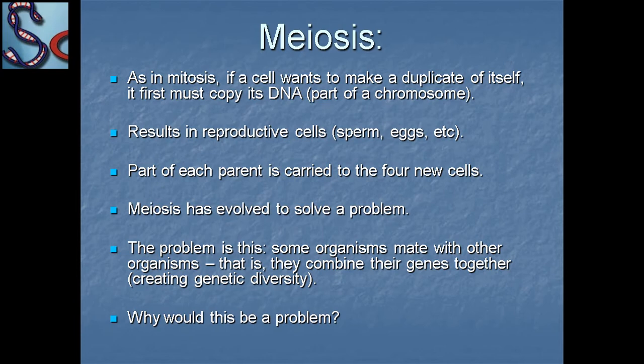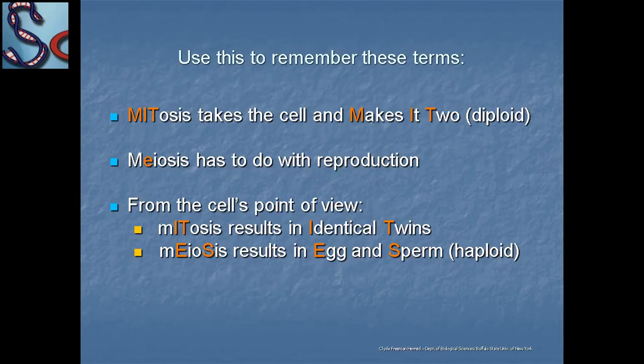Why would this be a problem? Think about it and share. To remember these terms: mitosis takes the cell and makes it two diploid cells, while meiosis has to do with reproduction.